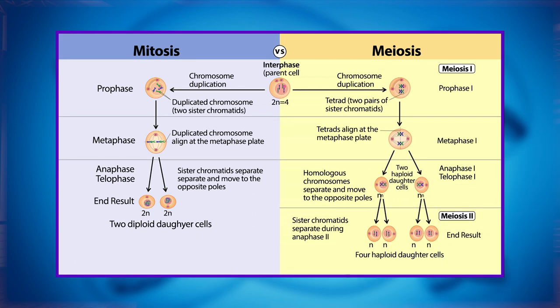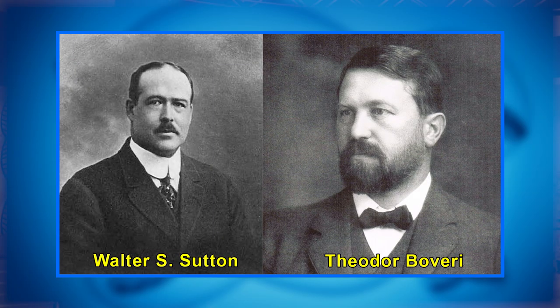When Gregor Mendel began studying heredity in 1843, chromosomes had not yet been observed under a microscope. Only with better microscopes and techniques during the late 1800s could cell biologists begin to stain and observe subcellular structures, seeing what they did during cell division — that is mitosis and meiosis. Eventually, some scientists began to study Mendel's long-ignored work and reevaluate his model in terms of the behavior of chromosomes. Around the turn of the 20th century, the biology community started to make the first tentative connections between chromosomes, meiosis, and the inheritance of genes.